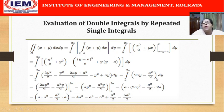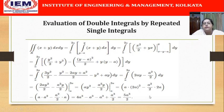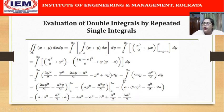This result, 2ay − a²/2, is now integrated with respect to y from a to 2a. Completing this calculation gives us 5a³/2, which is our answer for this problem.